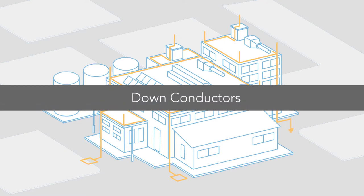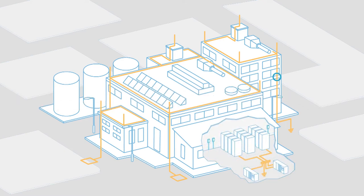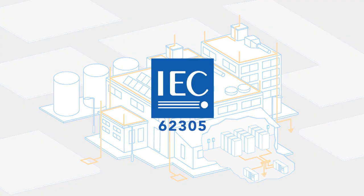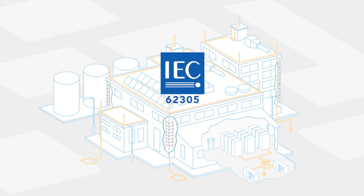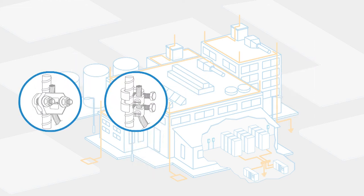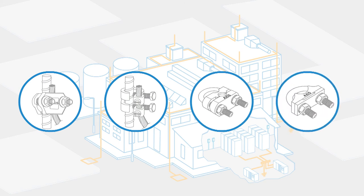Down Conductors: Down conductors connected to the air termination system with suitable Axis products should take the most direct route down the structure, with spacing between each one defined by the class of LPS. Since IEC 62305 also allows the use of rebars inside concrete structures as down conductors under certain conditions, Axis offers specially designed products to use this technology effectively.